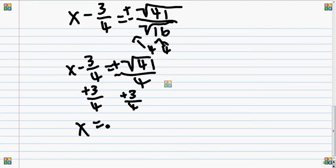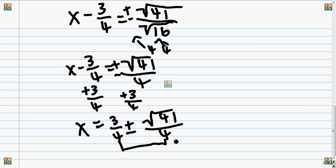So, x equals, oh, I don't have any space. Okay, x equals three-fourths plus or minus the square root of forty-one over four. I know that looks like a nine, but it's four. And then, since these are the same, we can combine these and make it all over one thing. So, x actually equals three plus or minus the square root of forty-one over four.